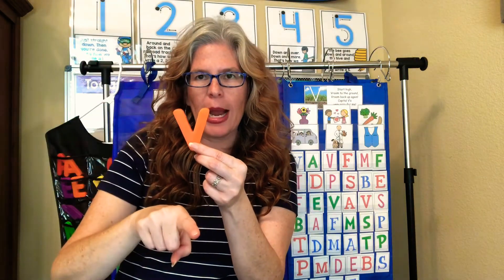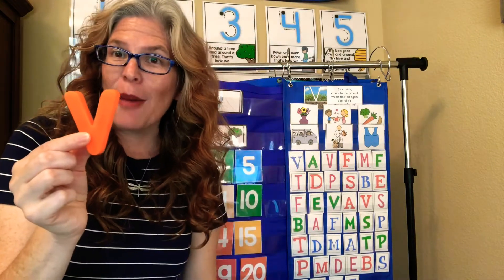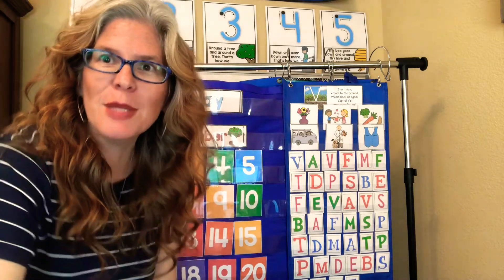Let's do it together again in the air, ready? Start at the very top of the sky and vroom down to the ground, and then vroom back up to the sky. And that's how you make a capital V. Easy as pie, right?